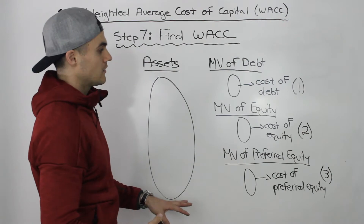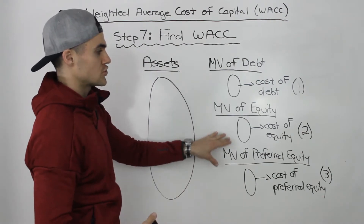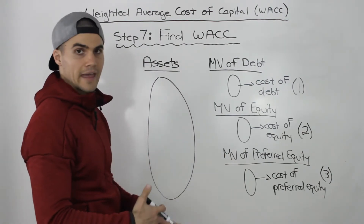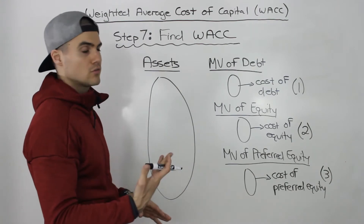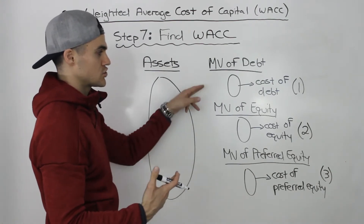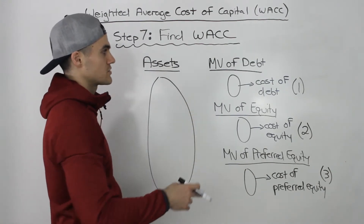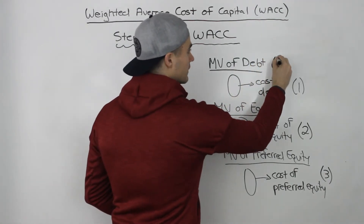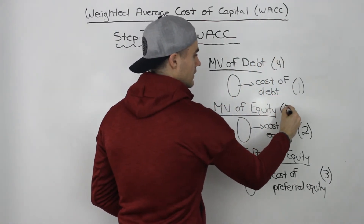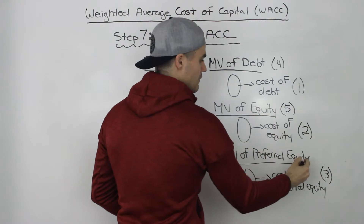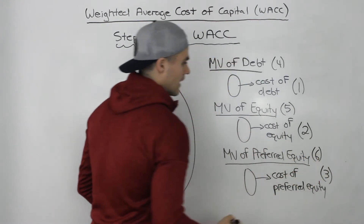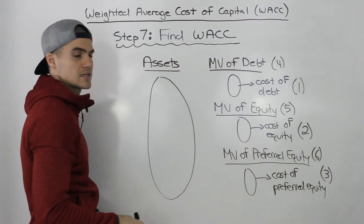And then we have to take a weighted average of these costs of capital. We have to do that by finding the market value of each source of capital. So we found the market value of debt — that was step four — market value of equity, that was step five, and then the market value of preferred equity, that was step six.